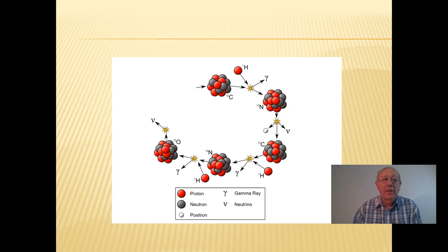That then can undergo decomposition and break down to give us a positron, a neutrino, and nitrogen-15.